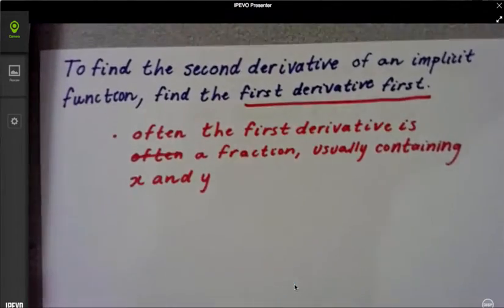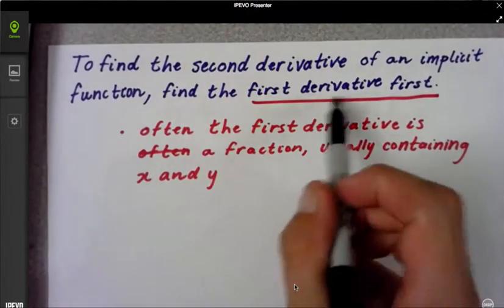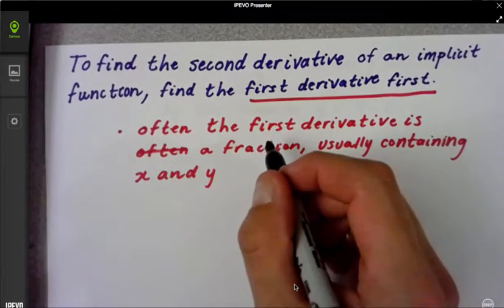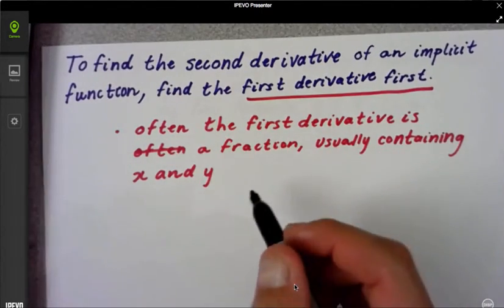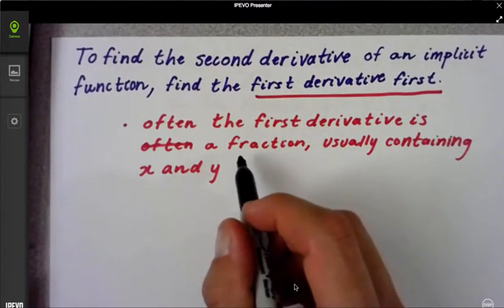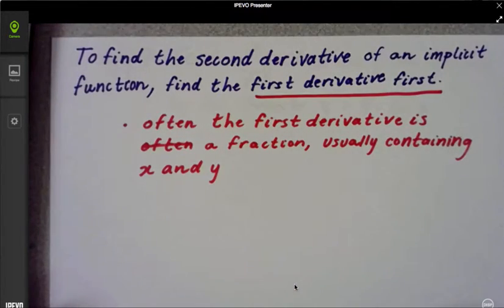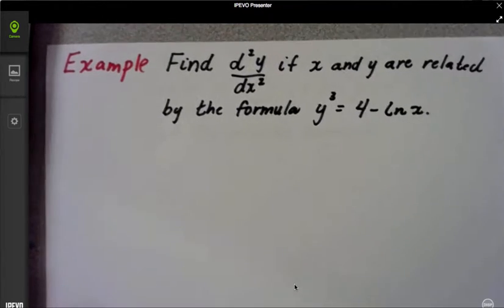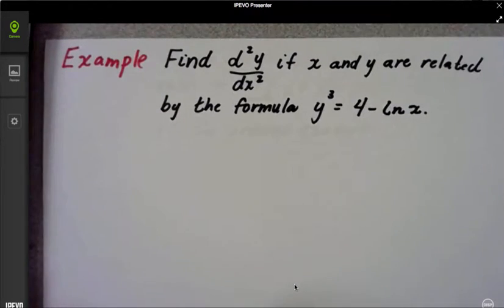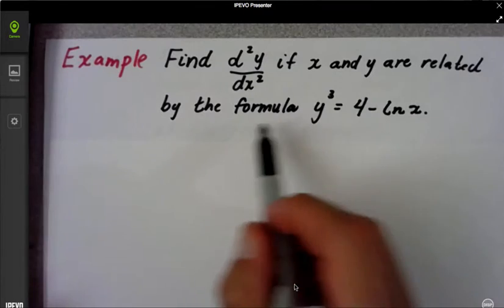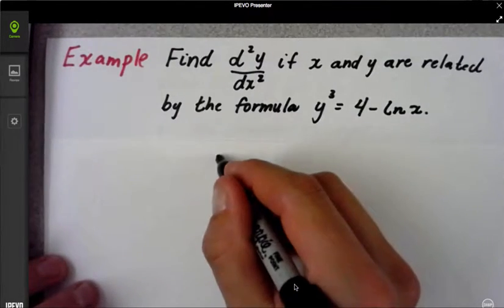Well, in order to find the second derivative, you've got to find the first derivative. Now, with implicit differentiation, if you're finding the second derivative, often times you're going to see a fraction, and that fraction is going to contain x and y. So it makes the second derivative a little bit harder to find. So we're going to do two examples today, and both of them are pertaining to this equation. So I'm going to go ahead and rewrite that.